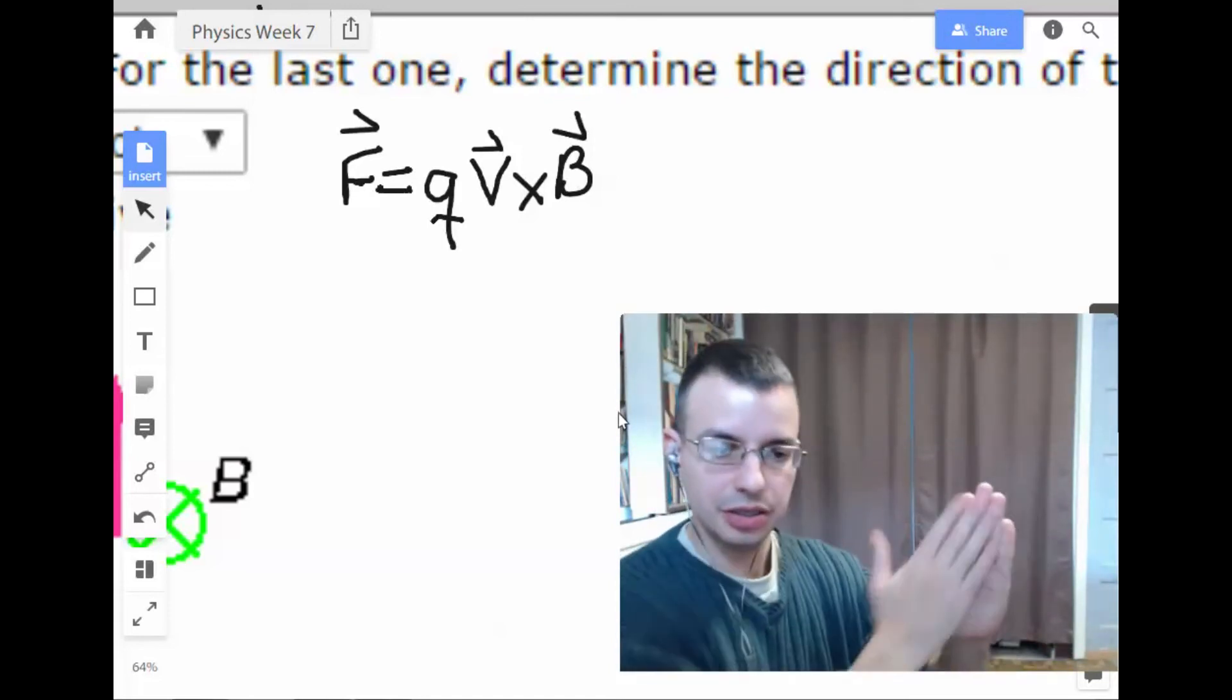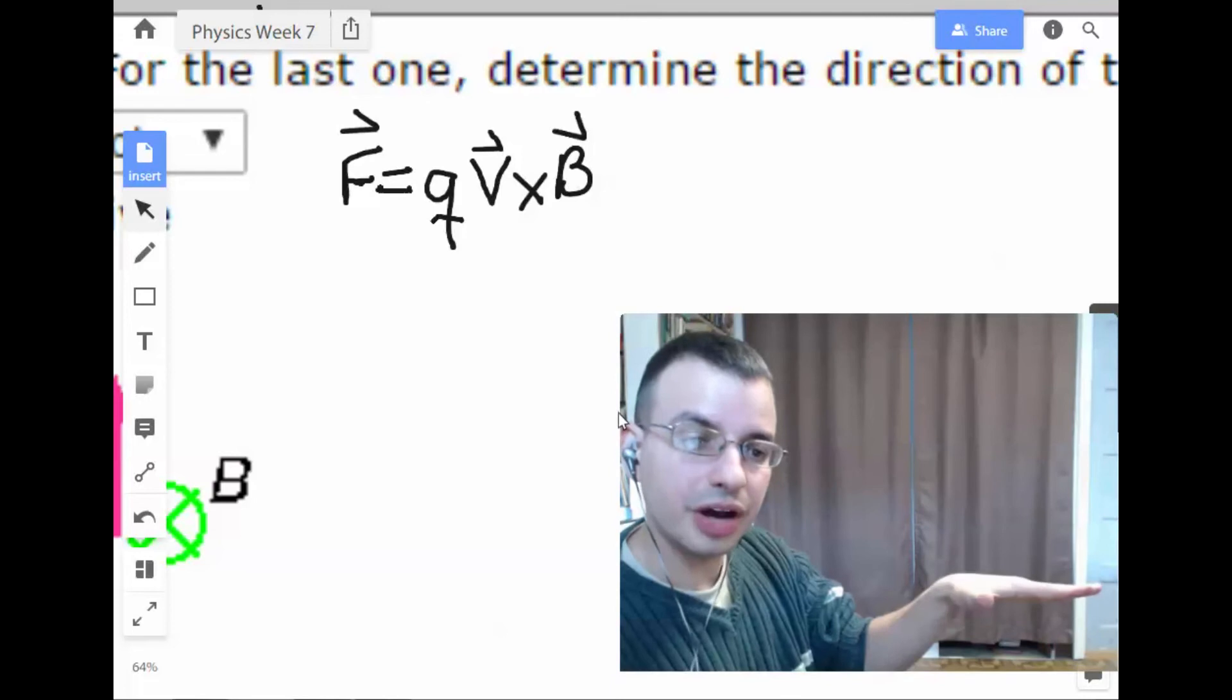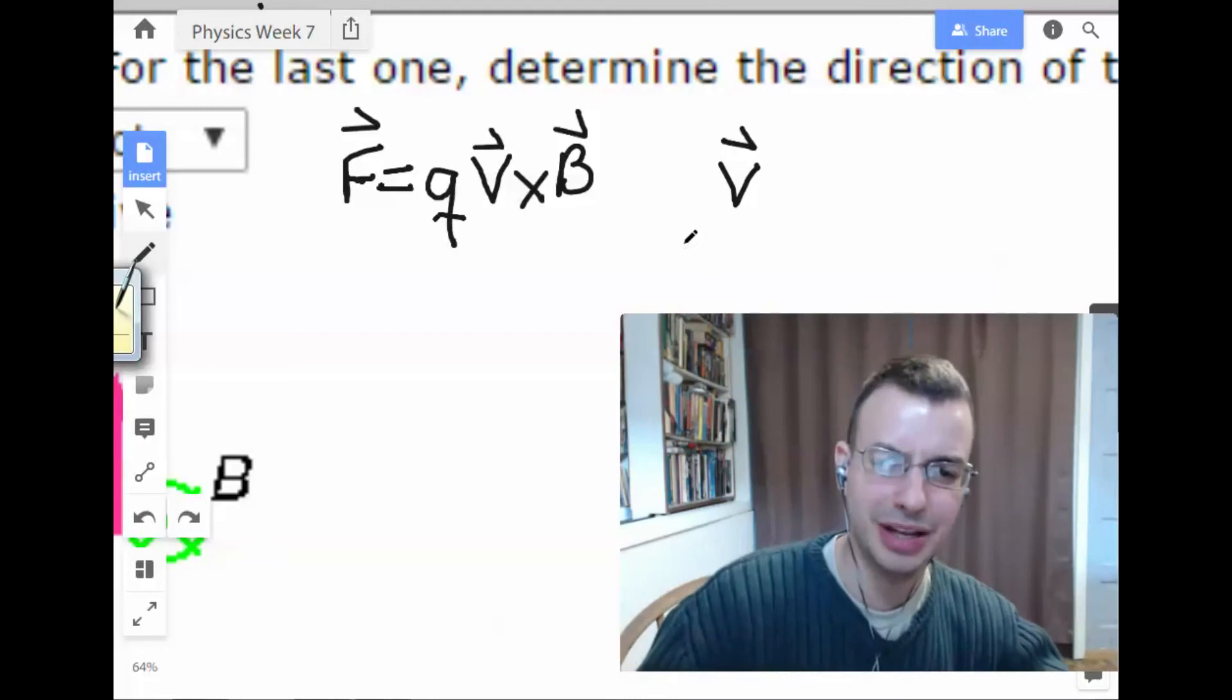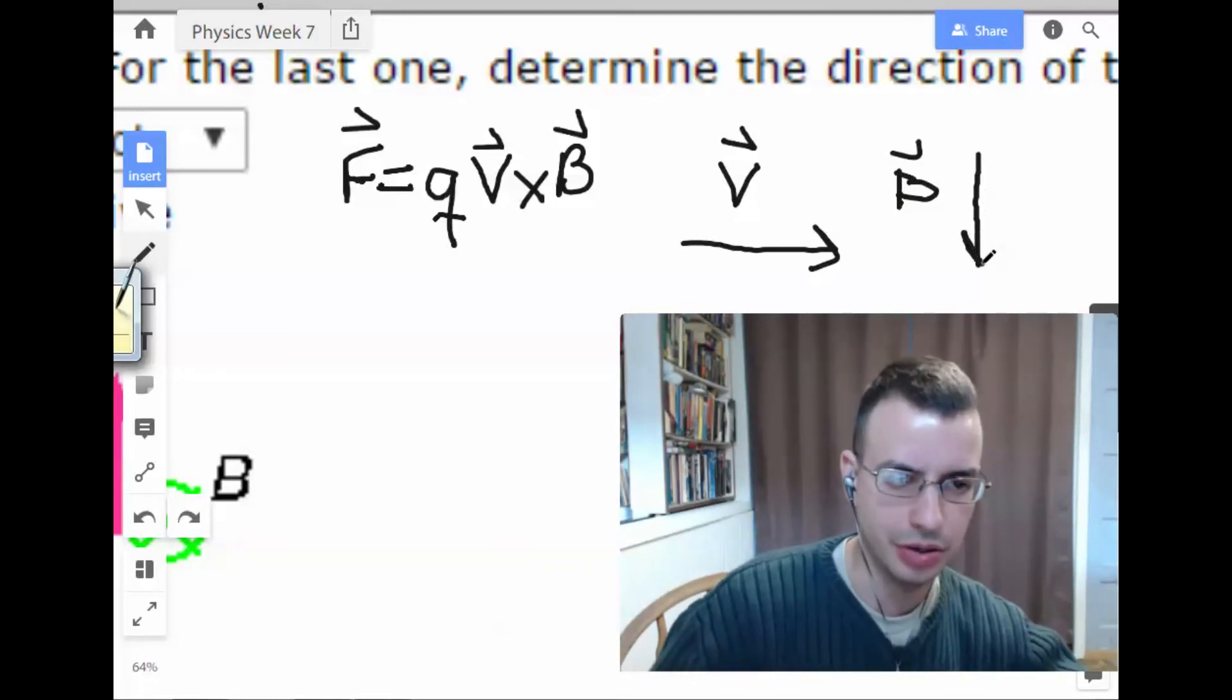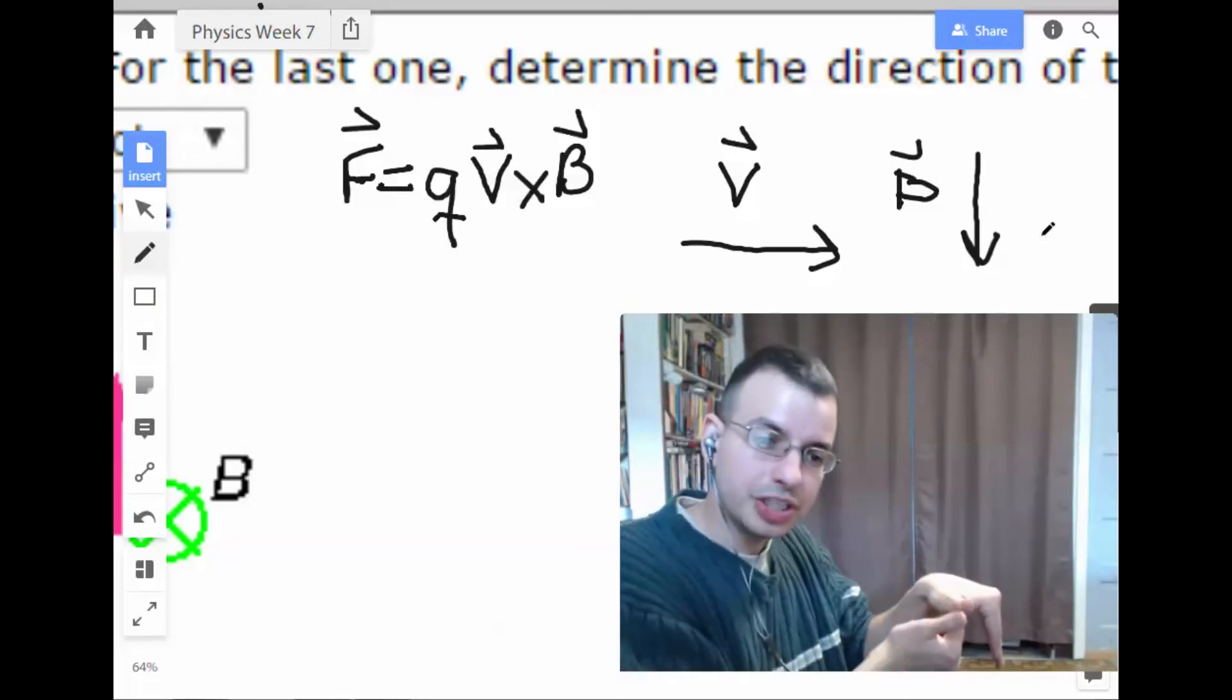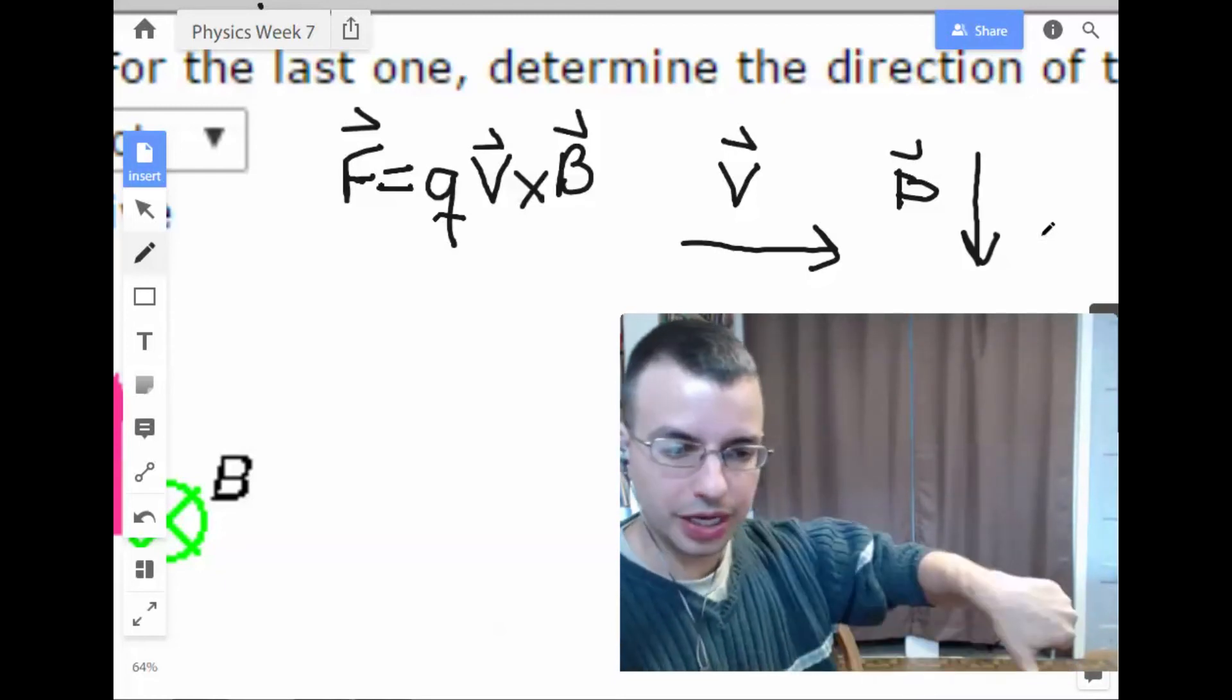So when you have V cross B or A cross B or whatever cross whatever, I like to start with my hand flat, thumb pointing out. You point your hand in the direction of the first symbol, so V in this case. Then you point it in the direction of B. So let's say we have V going left to right and B going down. So the way I would go through this is we have V going this direction and then you bend down. So then your direction would be towards you.